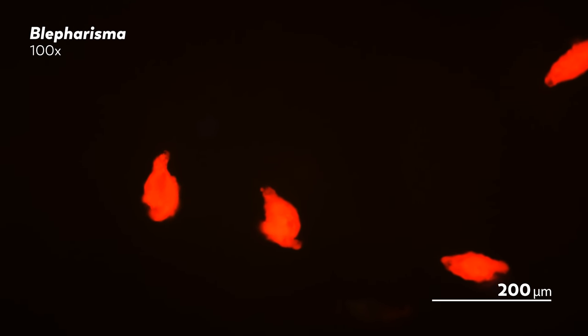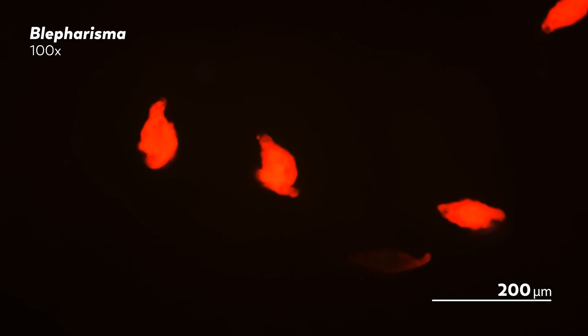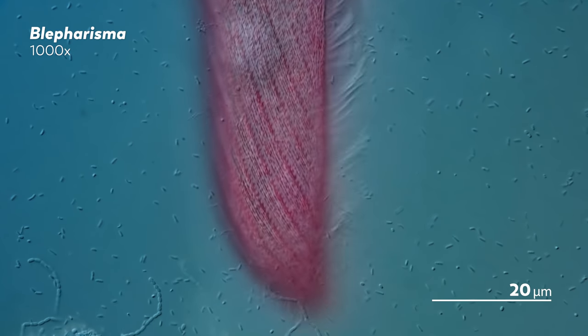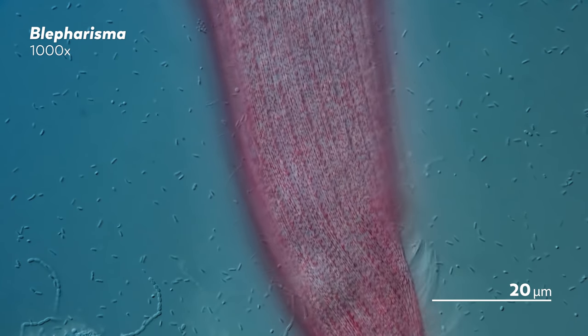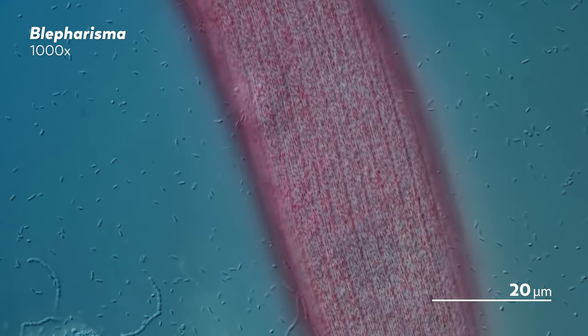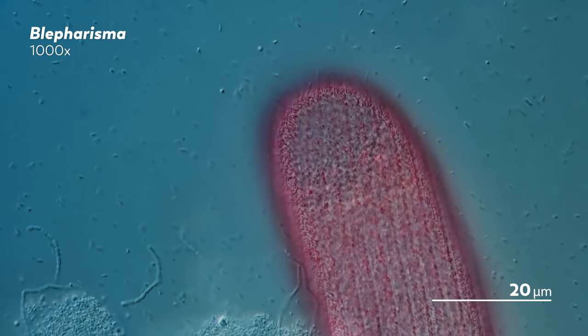But while toxic in our experiment, we should note that the blepharisman serves a key purpose for the blepharisma—defense. These pigment molecules are toxic to some of blepharisma's predators in both the light and the dark. That makes the pigment somewhat like UV light, necessary for survival, yet also a delicate negotiation.